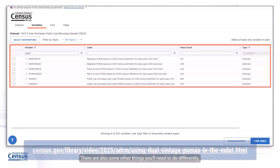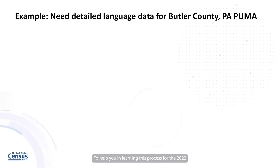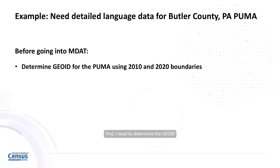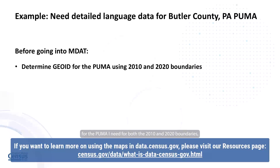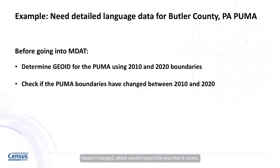There are also some other things you'll need to do differently, which we cover in the accompanying tutorial found at the link below. To help you learn this process for the 2022 five-year PUMS, let's walk through part of it using an example. Let's say that I want to find detailed data on the language spoken at home for the Butler County PUMA in Pennsylvania. Before I go into MDAT to create a table, there are a couple things I should check on. First, I need to determine the GOID for the PUMA I need for both the 2010 and 2020 boundaries, as there is no guarantee that it's the same for both. I also want to make sure that the boundaries themselves haven't changed, which would impact the area that it covers. There are a variety of census documents and tools that you can use to determine this. My first stop is with the PUMA name documents found at the links below.